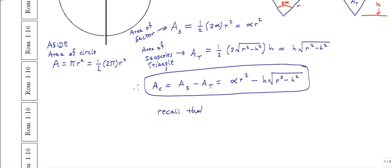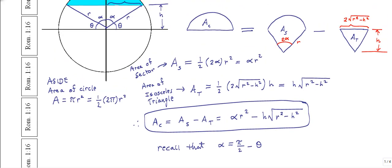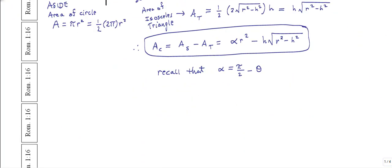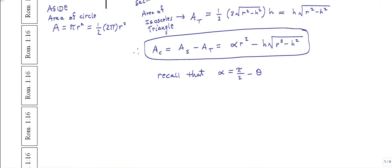Let's show how it is in fact the same. Recall that alpha is equal to pi over 2 minus theta. That is to say that alpha and theta are complementary angles as we said at the beginning. So we made this statement at the very beginning of the video and now I can write alpha as pi over 2 minus theta. And so if I stick this result in for alpha, then I can show that a sub c is equal to pi over 2 minus theta times r squared minus h times radical r squared minus h squared.